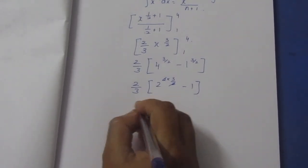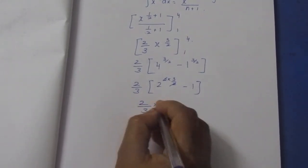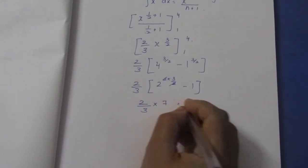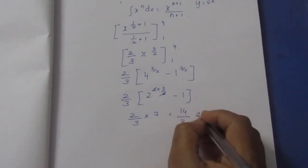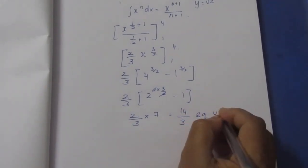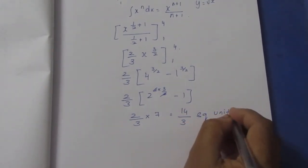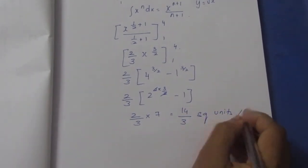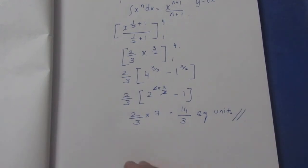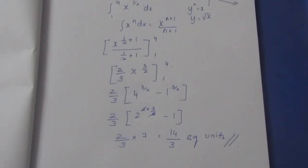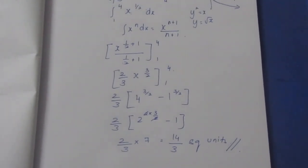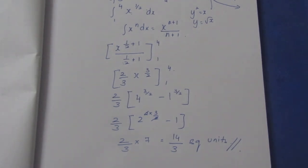So, 2 by 3 into 7, which gives 14 by 3 square units. Area is equal to 14 by 3 square units. Thank you.